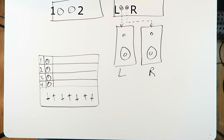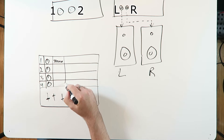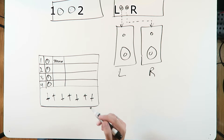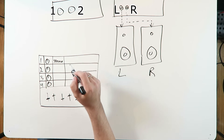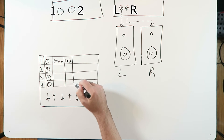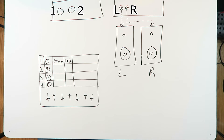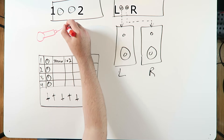Let's say we create a single track and we make that track a stereo track. We set its input source — and since this is a stereo track, it's going to want two inputs as its source; it's going to want a left and a right. So we select inputs one and two as our inputs. Now let's plug a microphone into input number one.